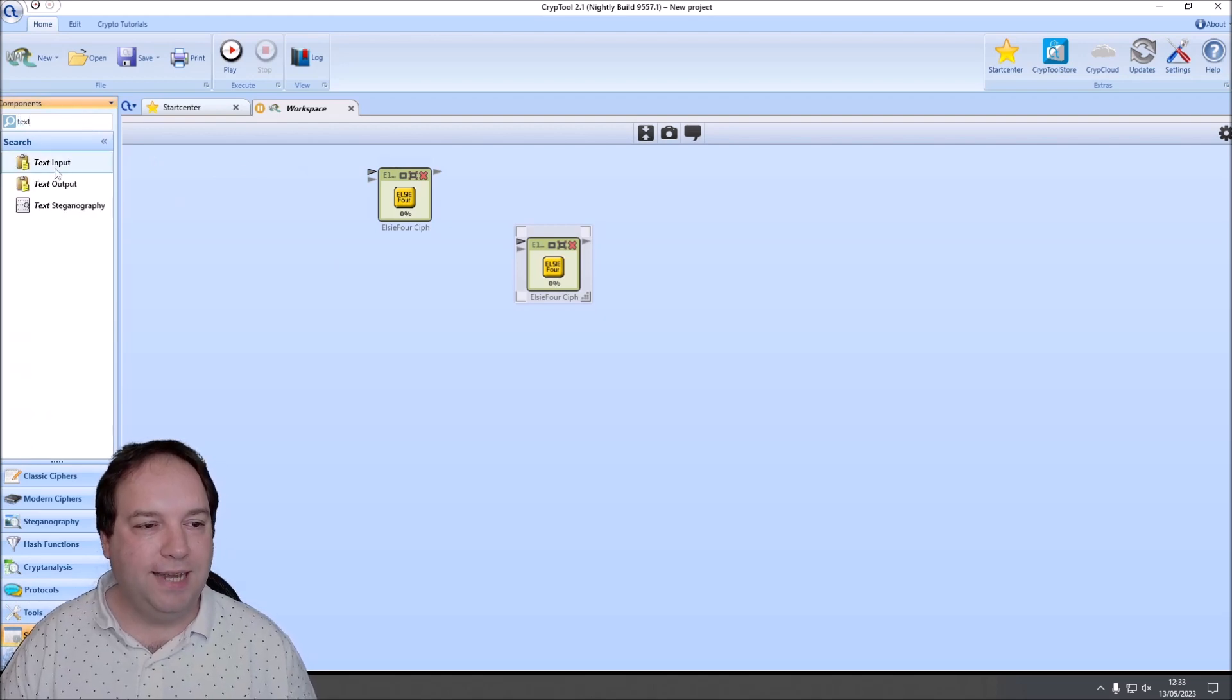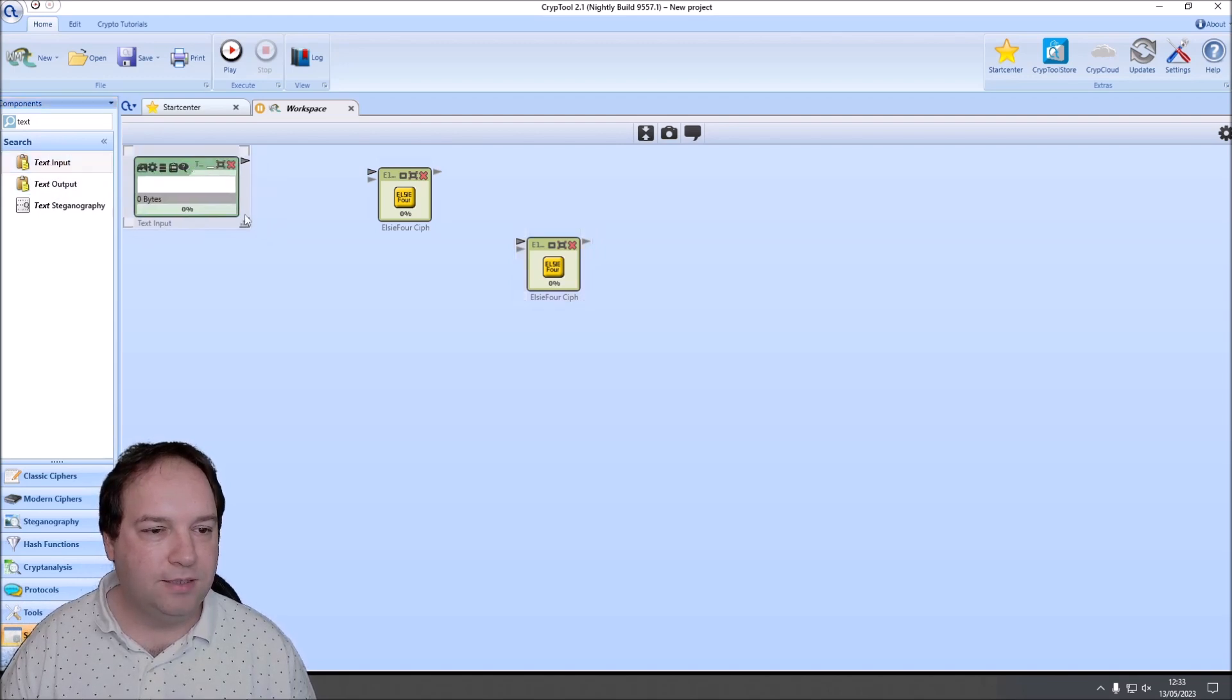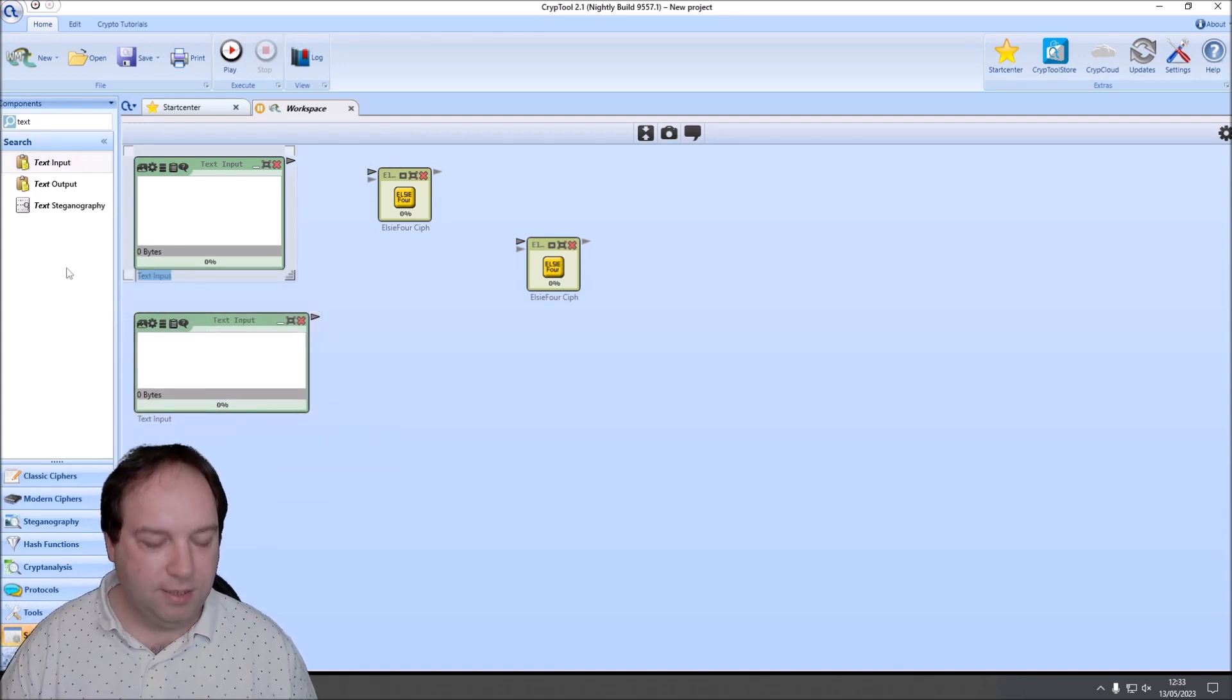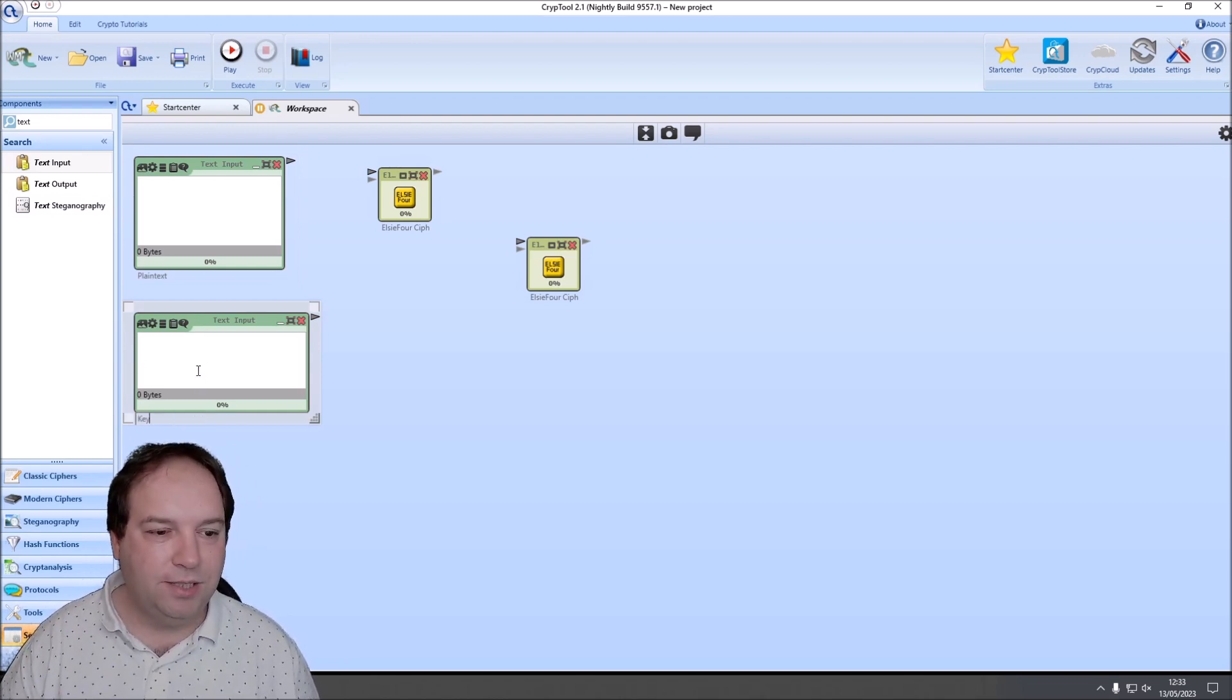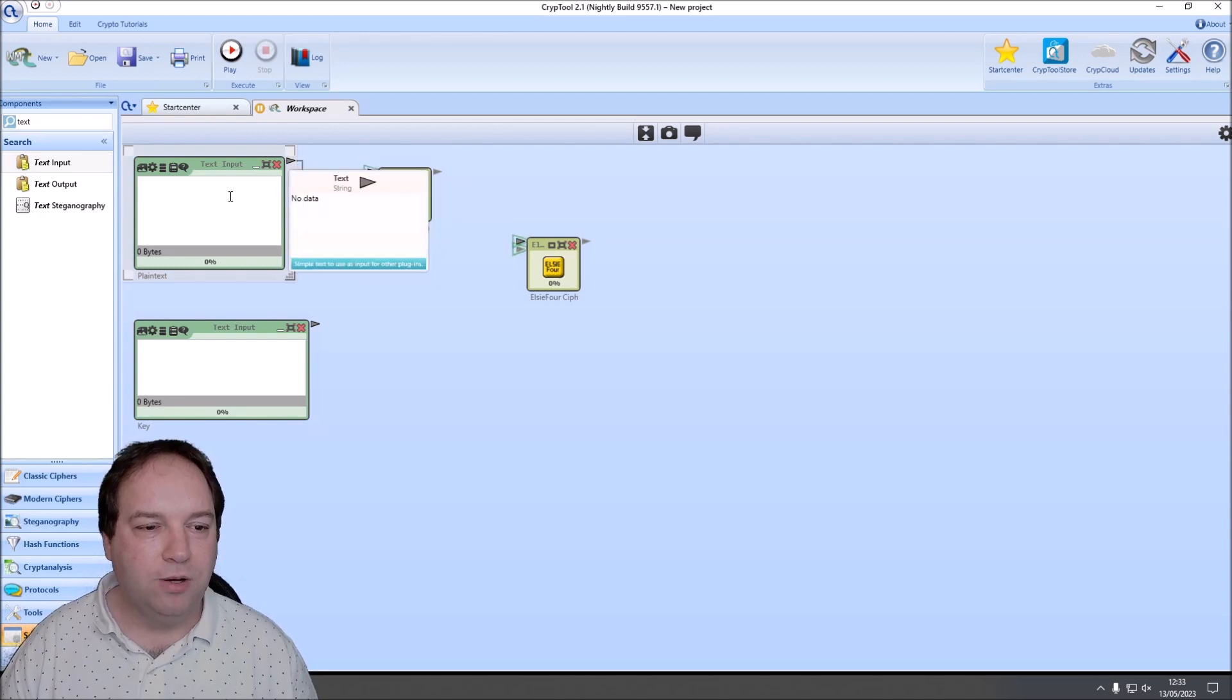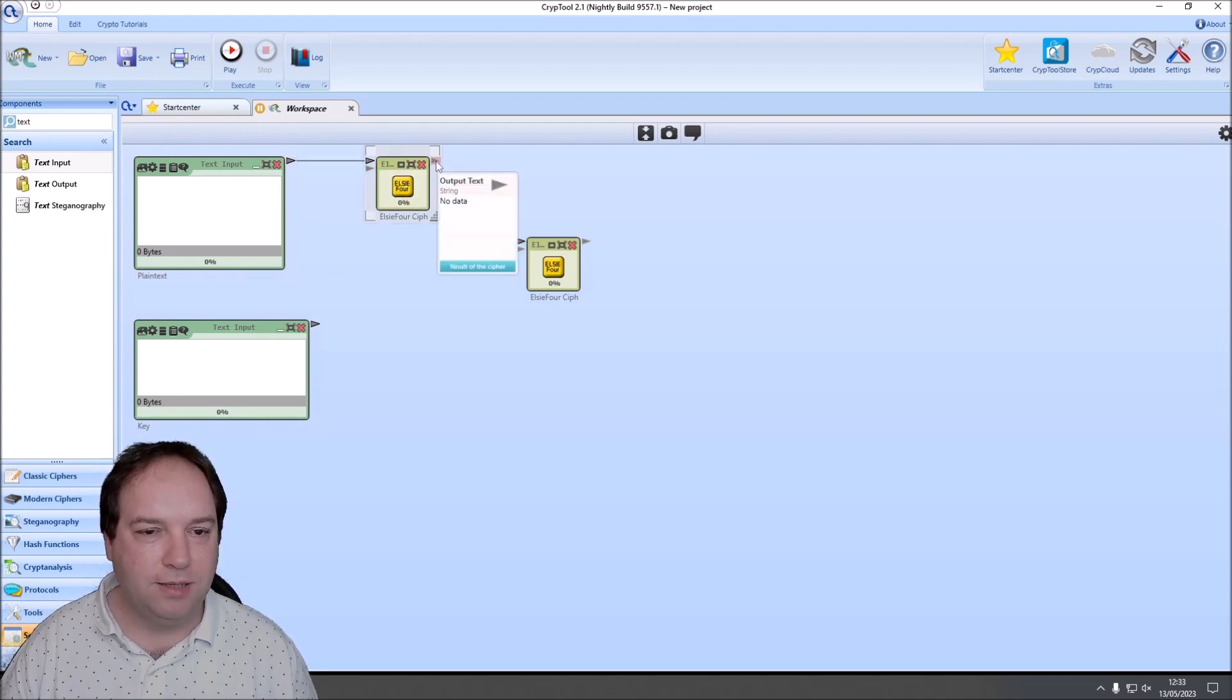Then we need text inputs and outputs. I search here for text and we get text input. This will be our plain text. And this here will be our key. We rename this here to plain text. And this here is our key. And basically here you can enter the 36 letter alphabet. But the LC4 cipher component also allows just to enter a word for instance here. And it permutes the alphabet using this word. We connect the plain text with the LC4 cipher component. We connect the one LC4 component with the other. And of course we have to connect the keys.